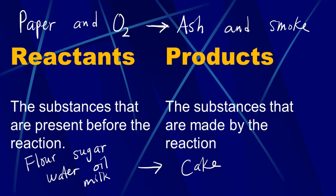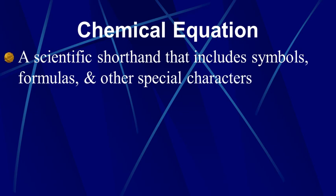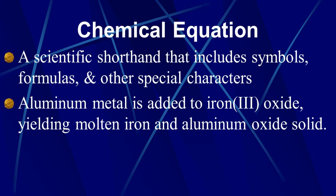Let's talk about a chemical equation. We write chemical reactions in the form of a chemical equation. There are some advantages to doing this. An equation is just a shorthand; it's what scientists use that includes symbols, formulas, and some other special characters to help us talk about chemical reactions. Here's an example of a chemical reaction written in words: this is called the thermite reaction. In my class we actually demonstrate this reaction. Aluminum metal is added to iron(III) oxide, which is basically rust, yielding molten iron and aluminum oxide solid.